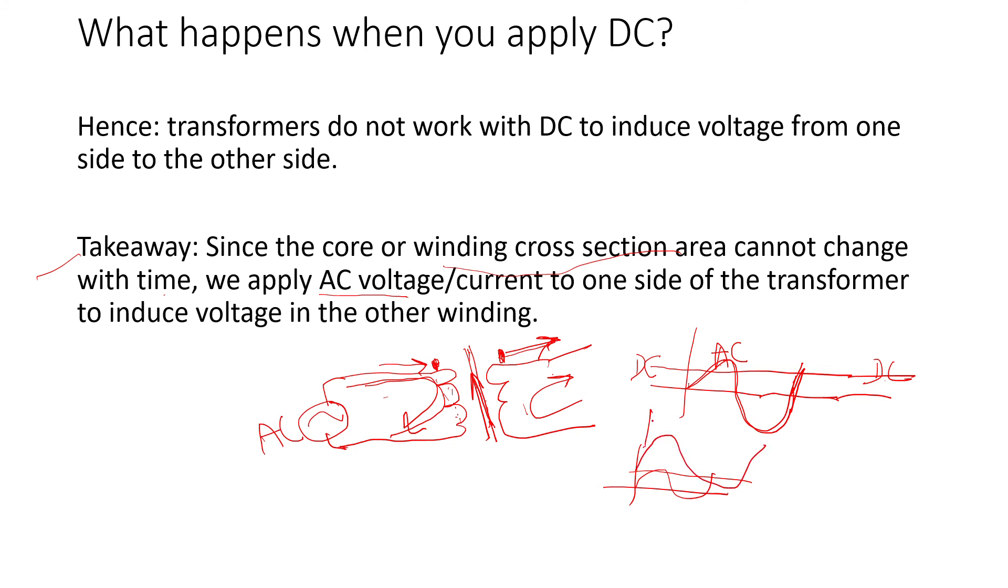For transformers, the core—this silicon steel—will saturate around 2.2 Tesla. If I'm operating under AC at 1.8 Tesla for instance at the max or the peak, and if you add the DC and it's significant DC, you can see it will quickly shift the peak of the flux density from 1.8.